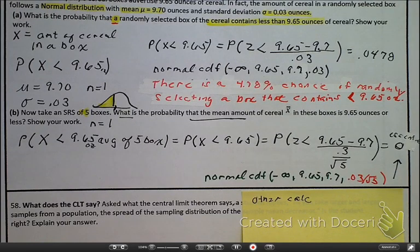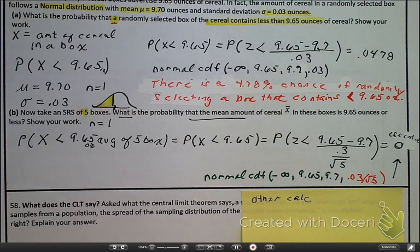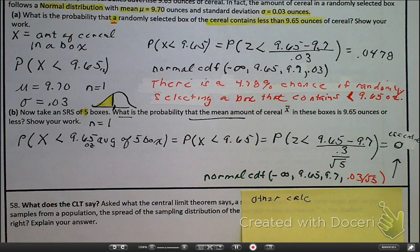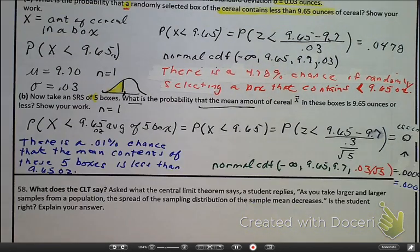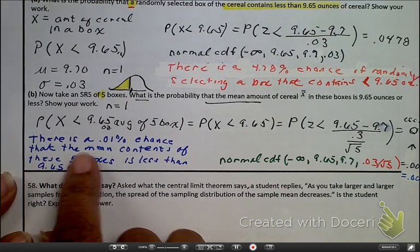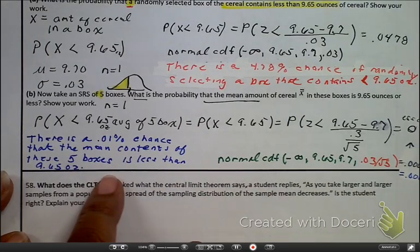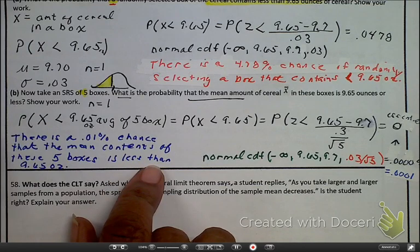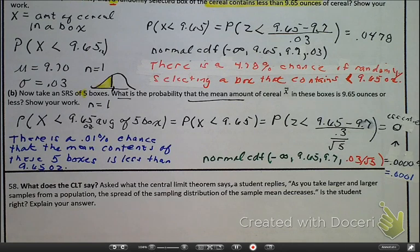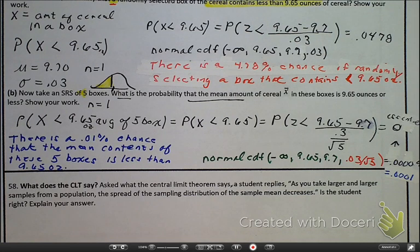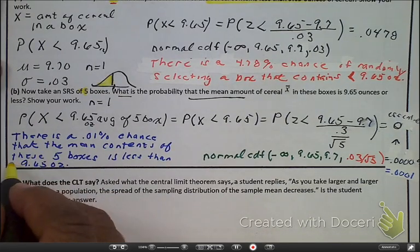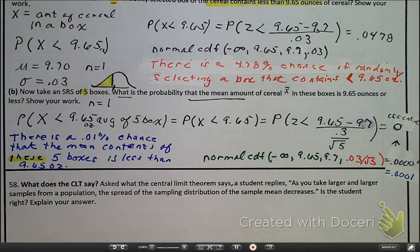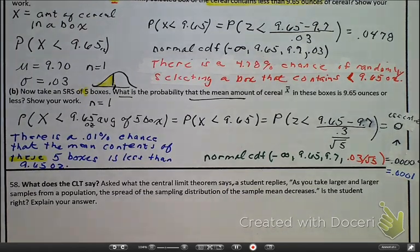And, like in everything else we do, we have to do what, for a lot of you, is the hardest part, which is the interpretation. So, let's wrap this up in context. There is a 0.01% chance that the mean contents of these five boxes is less than 9.65 ounces. And, the book says here, there is a 0.0001 probability that the mean contents of five randomly selected boxes is less than 9.65. And, the way I cover myself instead of having to say that's randomly selected boxes, because I said of these boxes, so that's my quantifier right there. So, TTFN, ta-ta for now. Peace out.